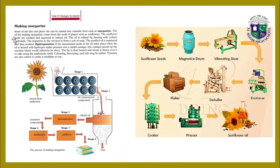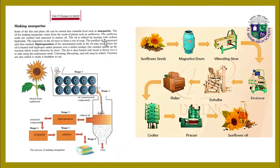Making margarine: some fats and plant oils can be turned into valuable food such as margarine. The oil for making margarine comes from the seeds of plants such as sunflowers. The sunflower seeds are crushed and squeezed to extract oil. The oil is refined by heating with sodium hydroxide — the impurities react to form a sort of soap, and the purified oil is separated and then washed. Hydrogenation of the unsaturated acids in the oil takes place when the oil is heated with hydrogen under pressure over a nickel catalyst, which speeds up the reaction.